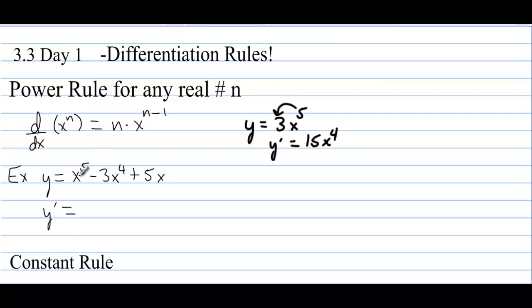Here's an example: we have x to the 5th minus 3x to the 4th plus 5x, and we're going to take the derivative of this. So we have 5x to the 4th — we reduce that power by 1 — minus 12x to the 3rd. We take 4 times 3 to get 12, reduce that power by 1. Then there is a power of 1 sitting on the last term, so 1 times 5 is 5, and that's all there is to it.